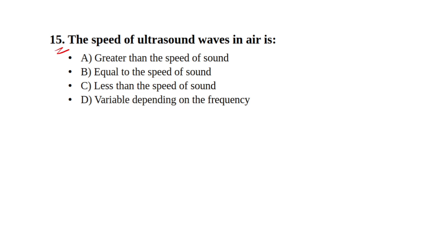The speed of ultrasound waves in air is: Option A, greater than the speed of sound; Option B, equal to the speed of sound; Option C, less than the speed of sound; and Option D, variable depending on the frequency. The right answer is Option B — equal to the speed of sound.